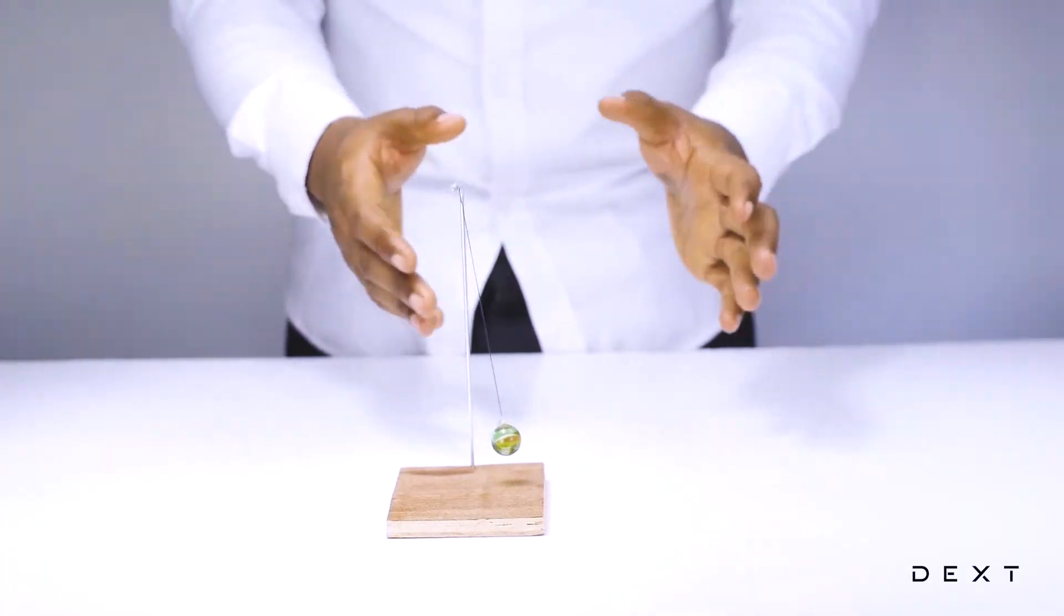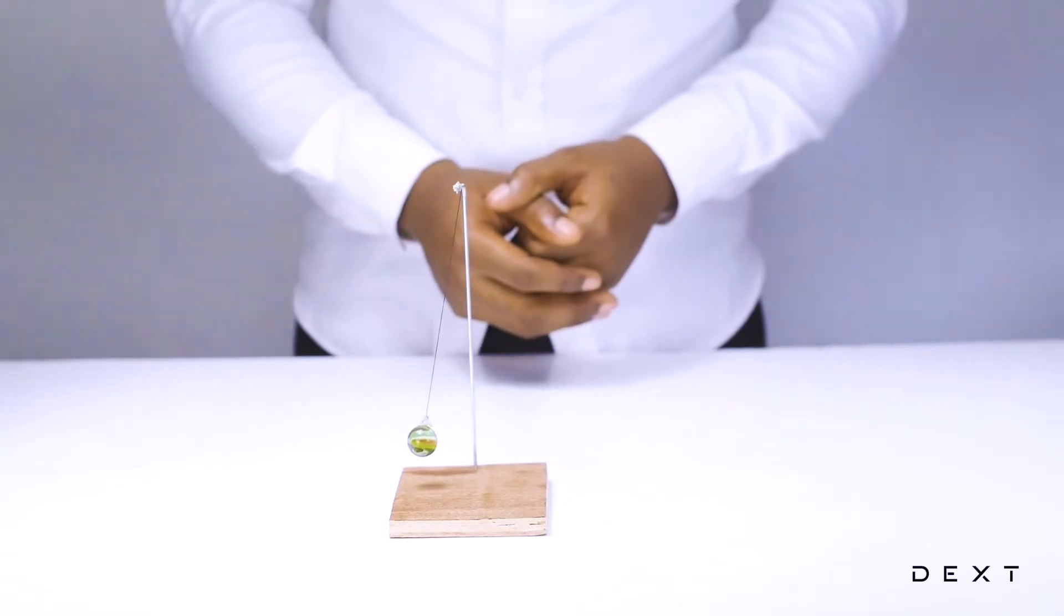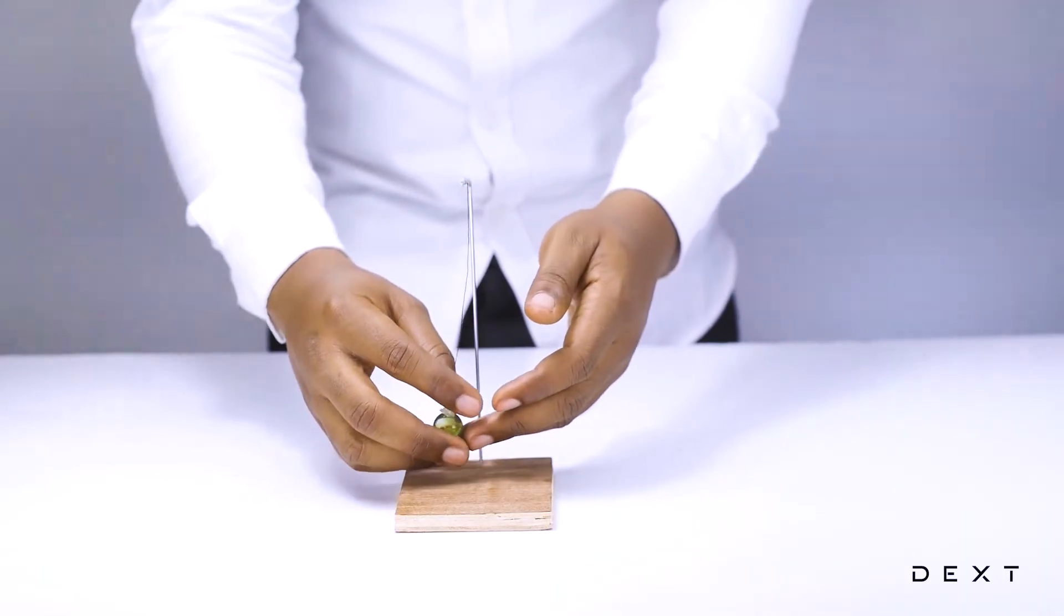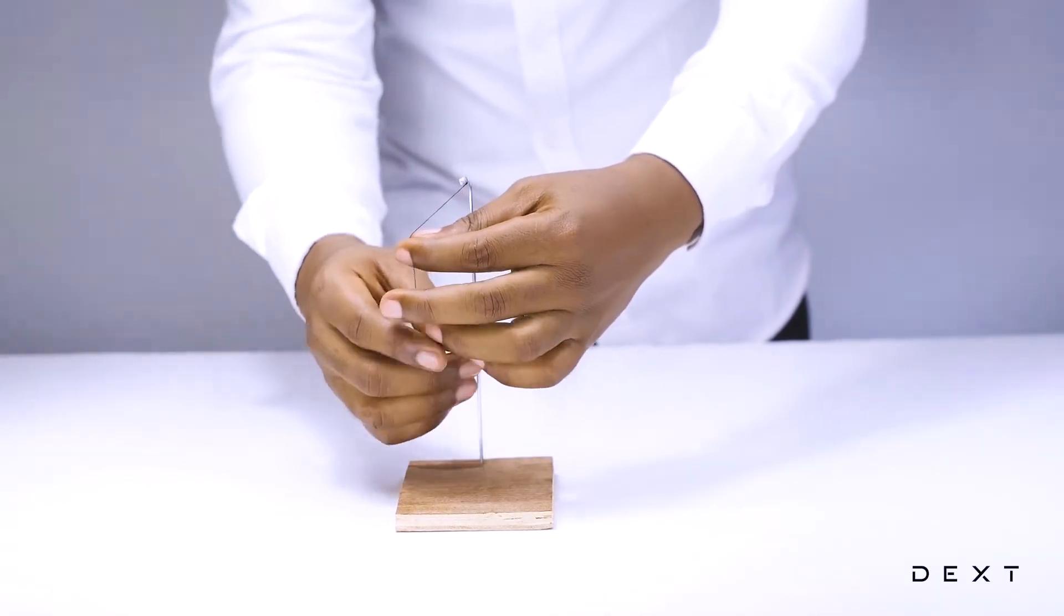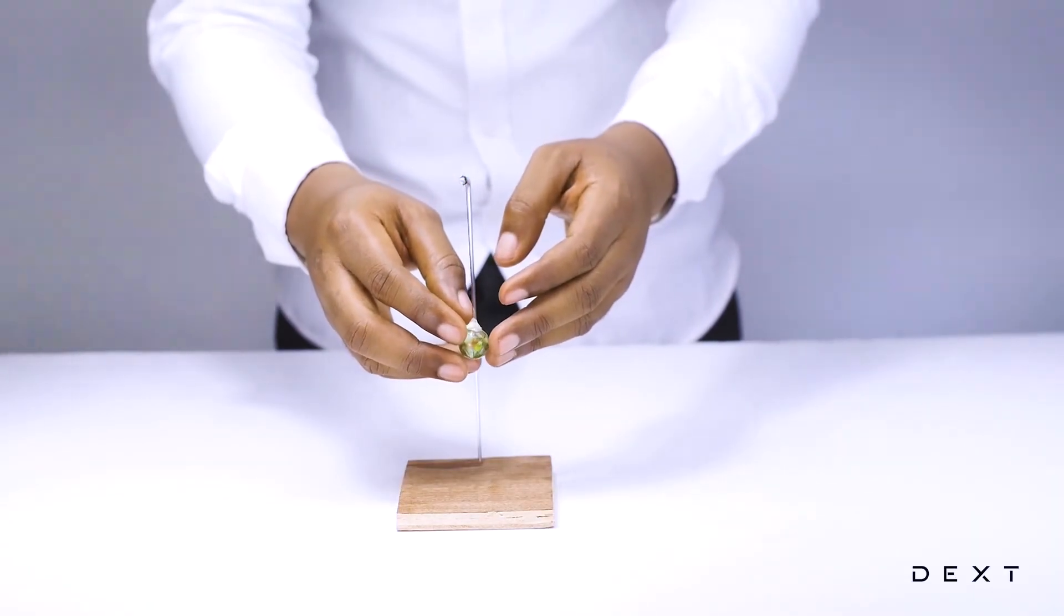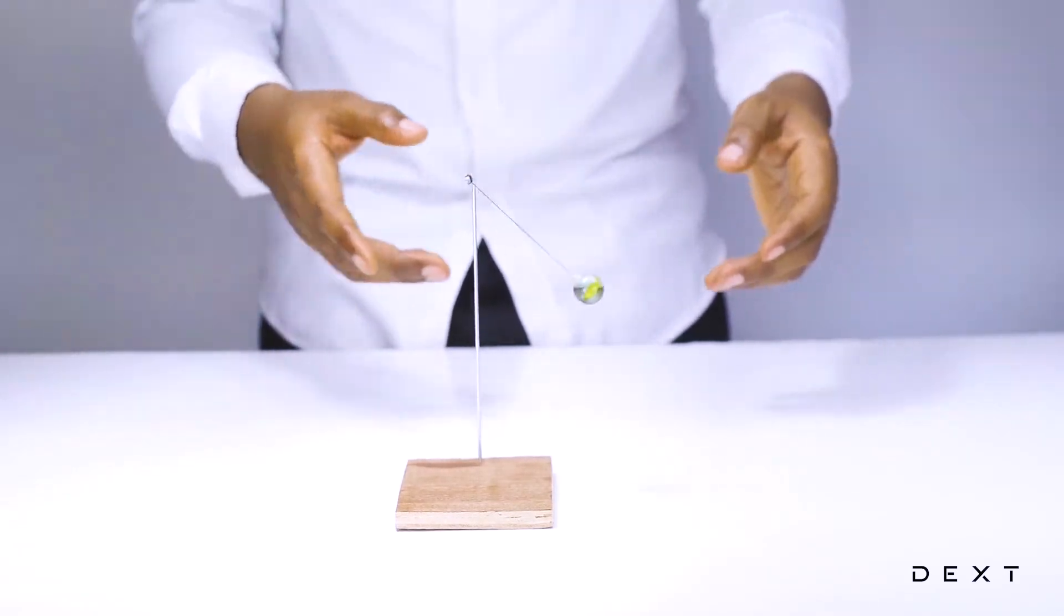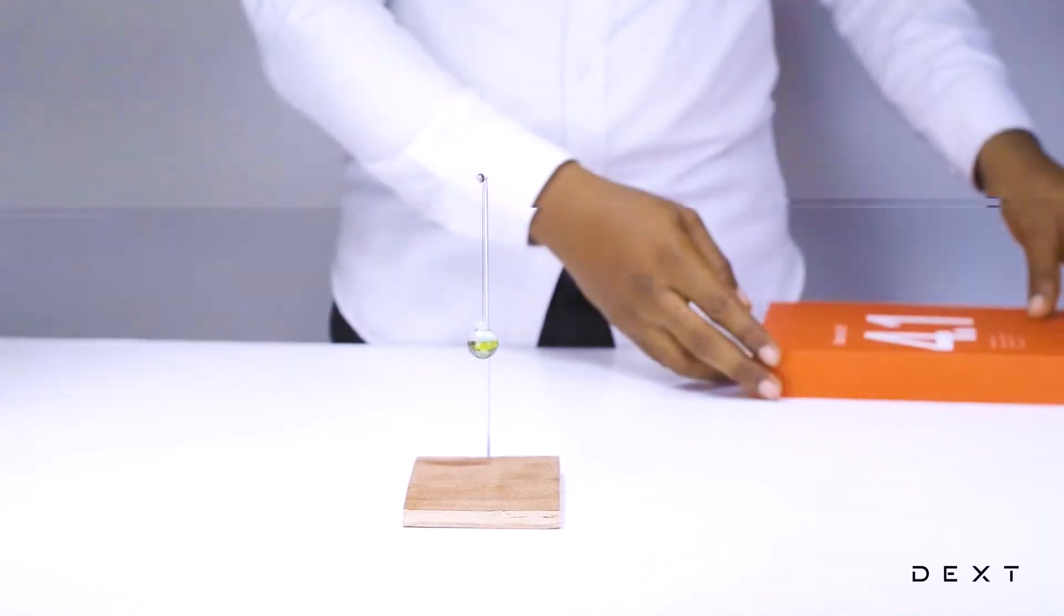This is your simple pendulum swinging back and forth. Something interesting would be to measure how long it takes before it comes to a halt. You can also reduce how far it is and then observe what happens. You would see that if you do this, the pendulum begins to swing much faster. Interesting, isn't it?